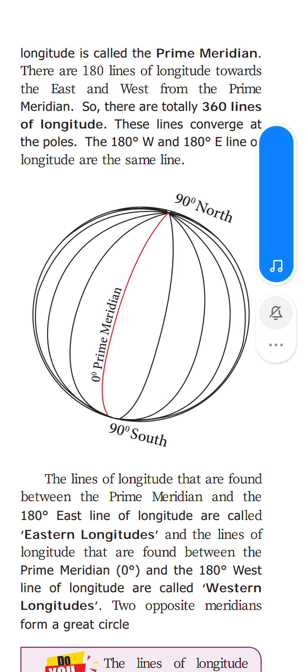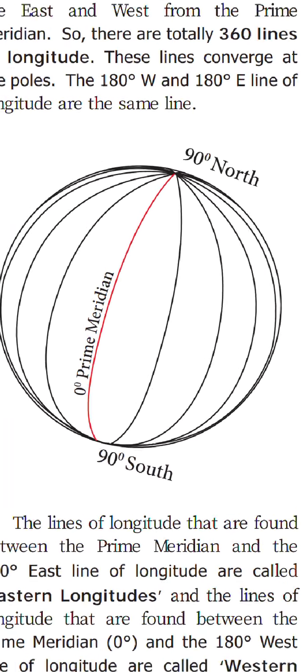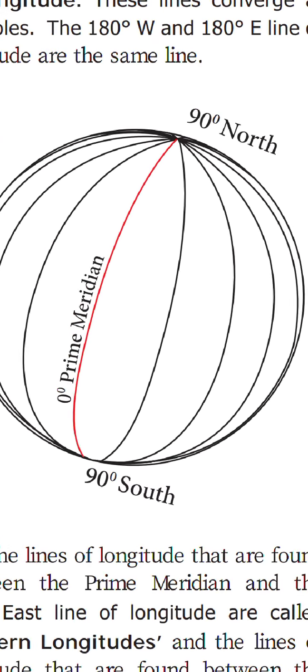If you join two meridians of longitude together, you will get a circle.